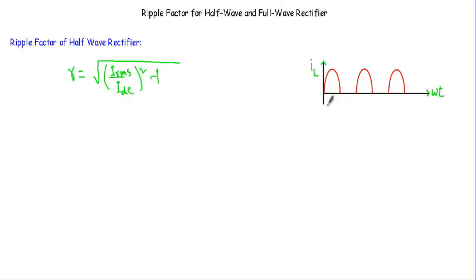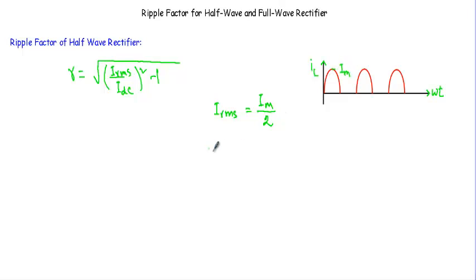In case of a half wave rectifier, IRMS — that means the RMS value of this load current — is equal to IM divided by 2, where IM is the maximum value of this load current, and IDC is equal to IM divided by π.